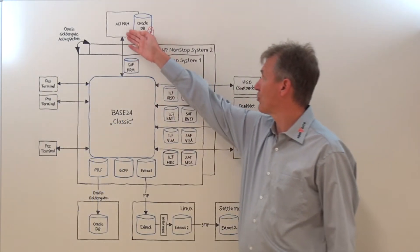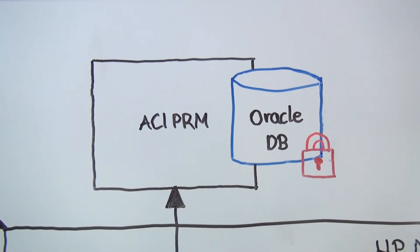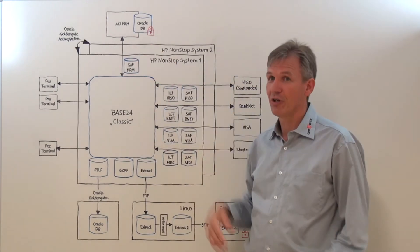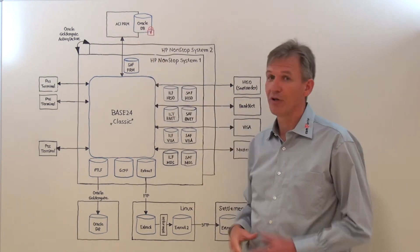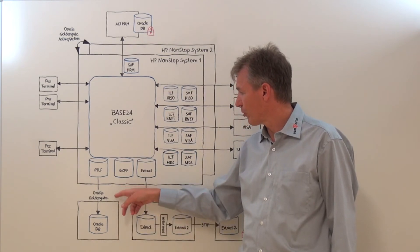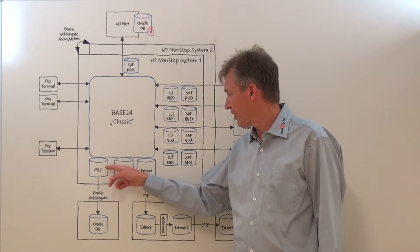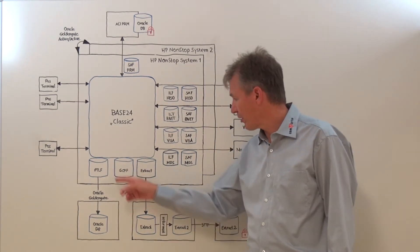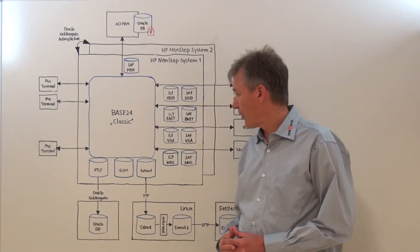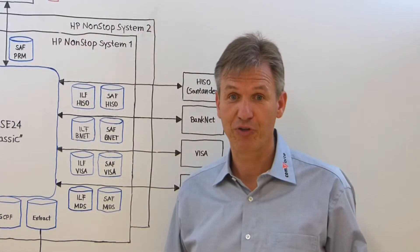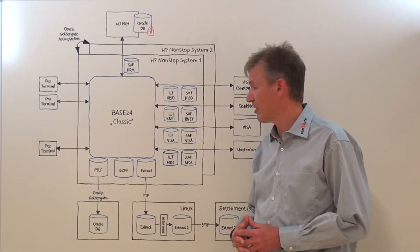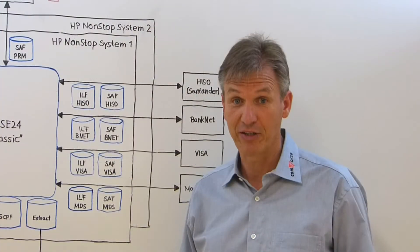We have another connection to an ACI system for fraud management that is directly connected via the XPNet process and data is stored in an Oracle database. We have another server that receives data via an Oracle GoldenGate replication, so PAN data from the PTLF log file is actually replicated to this Oracle database. Apart from that, we have even customer-specific enhancements. Here in this scenario, we have the customer-specific file GCPF which also contains transaction data that needs to be protected.